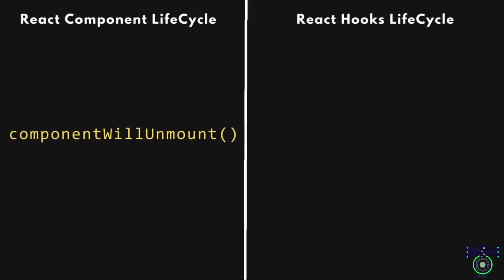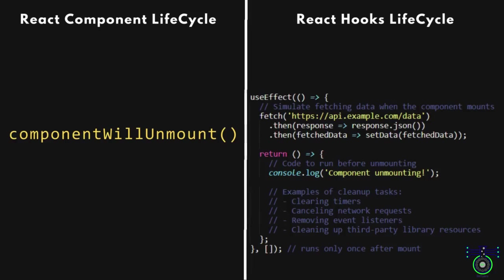The subsequent component is the componentWillUnmount lifecycle method equivalent. The cleanup function is located within the return statement of useEffect. This function is executed when the component is about to unmount, serving the purpose of componentWillUnmount in class components. It is used for cleanup tasks like clearing timers, cancelling network requests, removing event listeners, or cleaning up any resources. Because the dependency array is empty, the effect and its cleanup run only once.